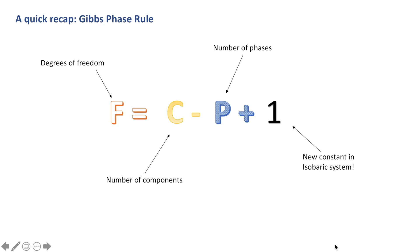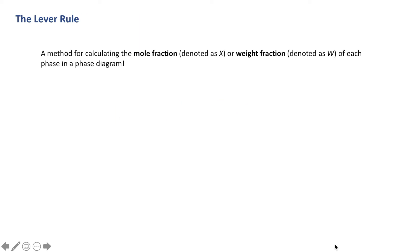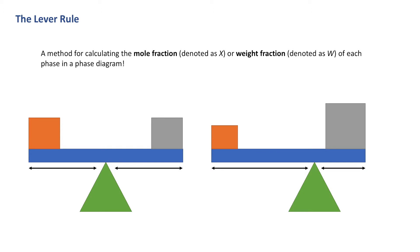The lever rule is essentially a method for calculating the mole fraction or weight fraction of each phase in a phase diagram. Picture a seesaw - in the middle we have a fulcrum point which our seesaw is balanced on. We have two squares either side which are the same size, so our seesaw is currently balanced, meaning we have an equal distribution of weight either side. What happens if that fulcrum point starts to lean? To stop that seesaw from leaning, we're going to need to redistribute the weight to keep it balanced. This is the main idea behind the lever principle.